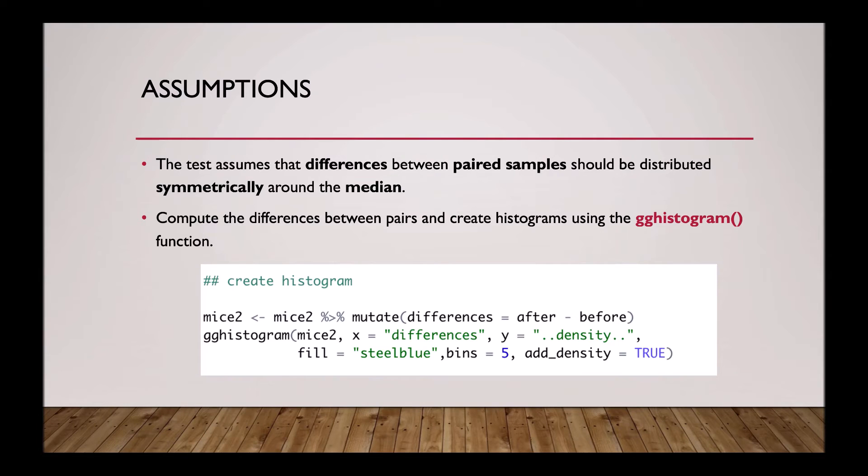The Wilcoxon test assumes that the difference between paired samples should be distributed symmetrically around the medium. To look at this, we firstly need to compute the differences between pairs using the following code. Then we can create a histogram using the gg histogram function.